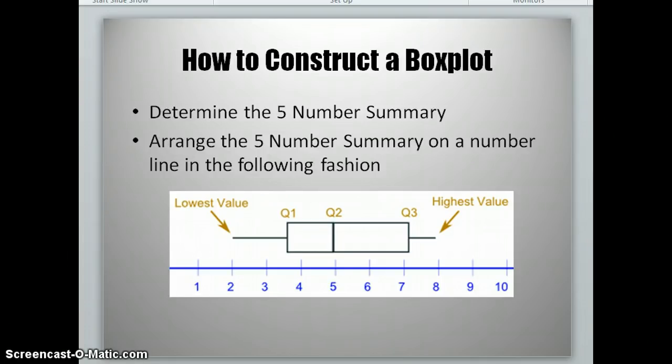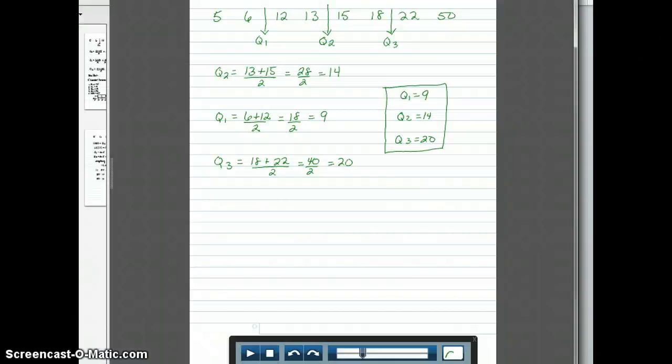Let's look at an example of how to construct a box plot with the data that we used before. Now we've already found our three quartiles, so the next thing we're going to do is make a list of our five-number summary.